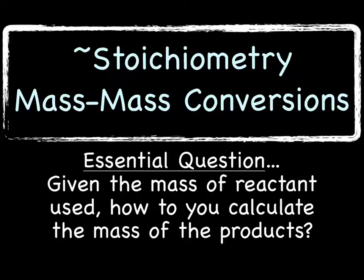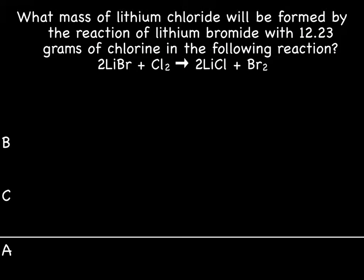For today's lecture make sure you have your periodic tables and calculators handy. To learn mass-mass conversions we're really just going to do a practice problem because you actually know all the pieces, it's just putting them all together into one big problem. The problem we're going to work on is: what mass of lithium chloride will be formed by the reaction of lithium bromide with 12.23 grams of chlorine in the following reaction?